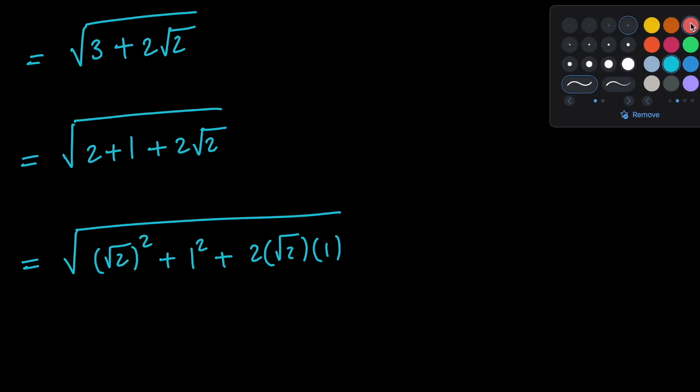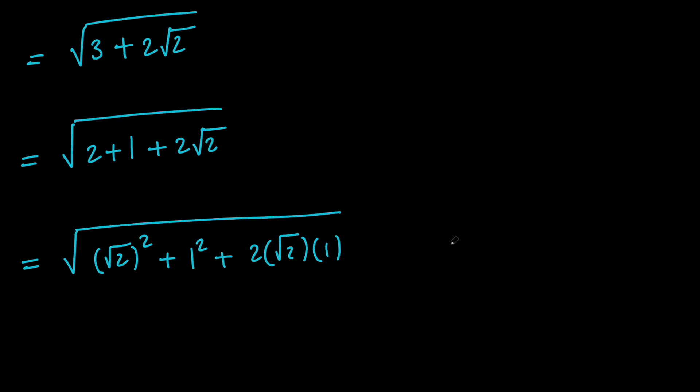Now, notice that the expression in the form of a squared plus b squared plus 2ab is a perfect square, which equals a plus b squared. So if you compare these two, you can see that the expression under the square root is a perfect square.